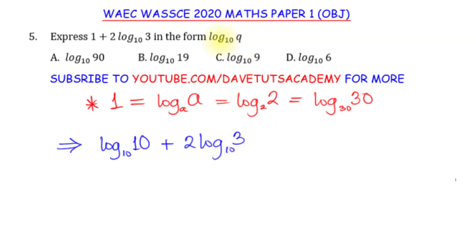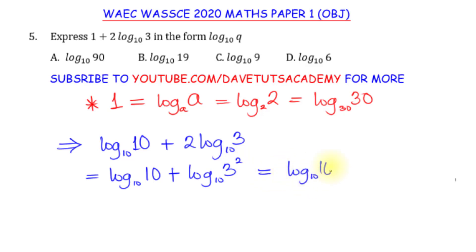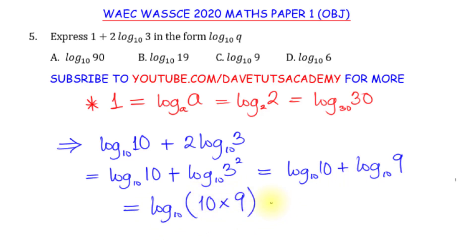We want to eliminate the coefficient 2. Using the power rule of logarithms, we bring 2 up as an exponent: log₁₀(10) plus log₁₀(3²). Since 3² is 9, this becomes log₁₀(10) plus log₁₀(9). Then, applying the addition rule — when two logs with the same base are added, we multiply their arguments — we get log₁₀(10 × 9), which is log₁₀(90).